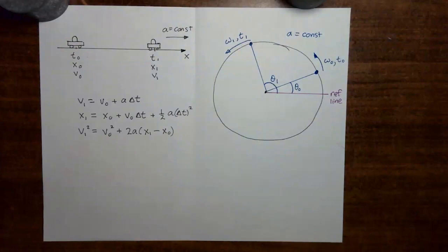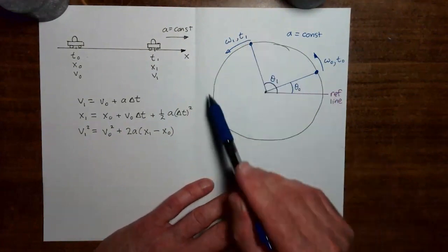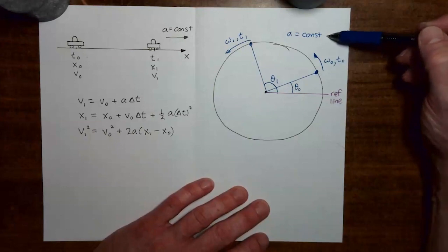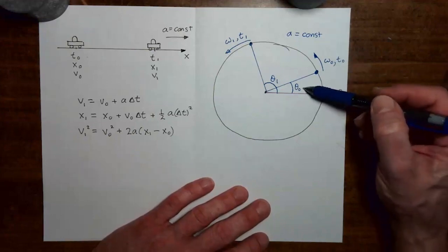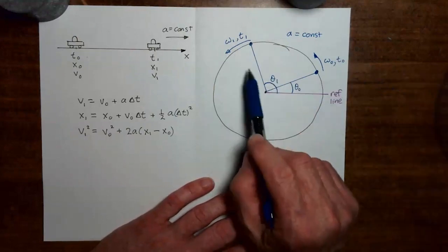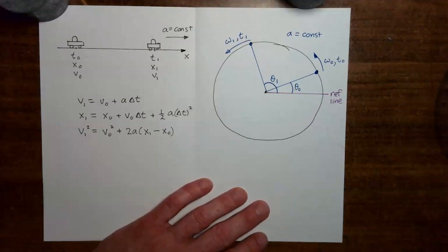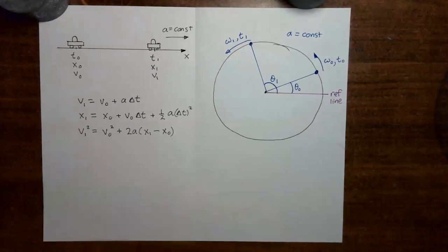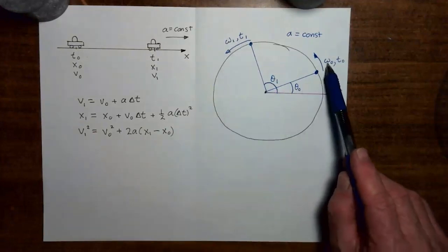In this part of the course, we might consider a scenario more like this. Here we have a circle, and we have an object which is moving around the circle. We assume that the object moves with a constant angular acceleration. At time zero, the angular position is θ₀ and the angular velocity is ω₀. We would like a set of equations which relates the rotational kinematic variables at the later time — θ₁, ω₁, t₁ — to θ₀, ω₀, t₀.